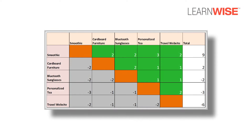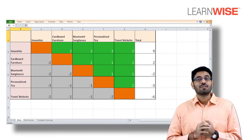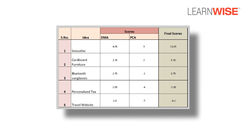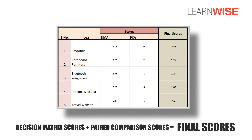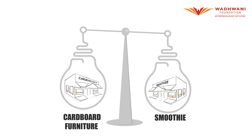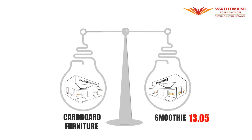Now I have scores from the paired comparison analysis, and I already had scores from the decision matrix analysis. We can calculate the final scores for each idea by adding the decision matrix and paired comparison analysis scores together. The final scores will reveal the top two ideas in your list. From our examples, the scores of the smoothie and the cardboard furniture business are the highest at 13.05 and 5.35, and so they are the top two ideas.